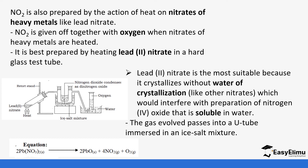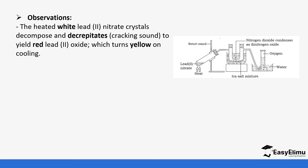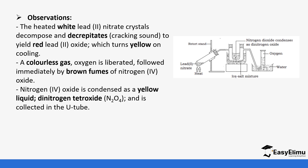Lead nitrate when heated produces lead oxide, plus nitrogen 4 oxide, and oxygen gas is given off. Observations: the white lead 2 nitrate crystals decrepitate with a cracking sound, forming a red or orange lead 2 oxide which turns yellow on cooling. A colorless gas — oxygen — is also liberated, followed by brown fumes of nitrogen 4 oxide.